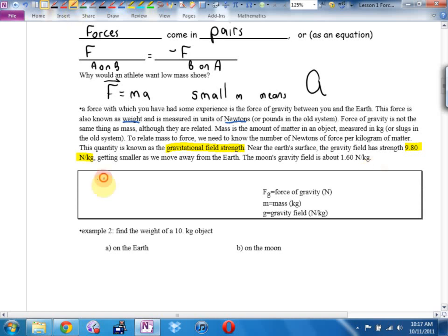Here's the equation. Assuming the pen decides to write. Let's try that again. Here's the equation. Fg equals mg. Where g is 9.8 newtons per kilogram or meters per second squared.